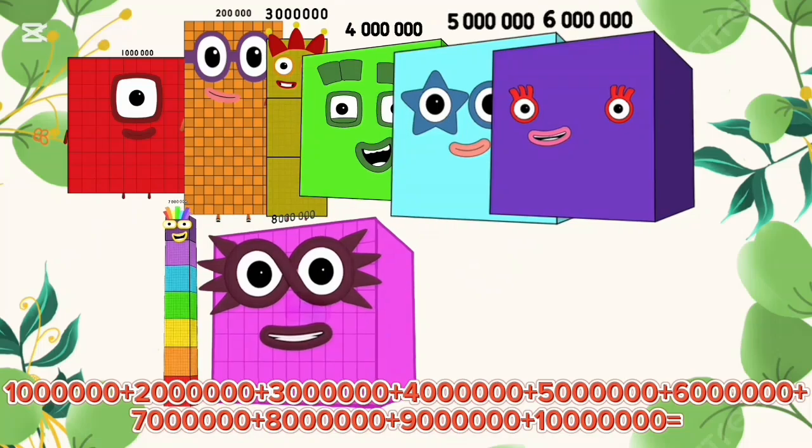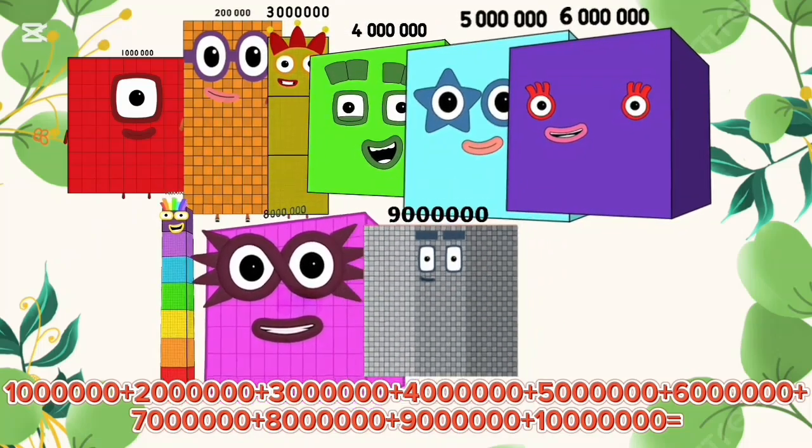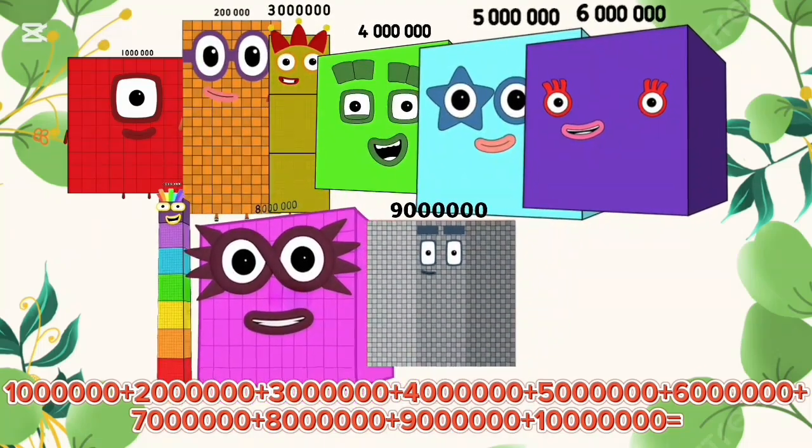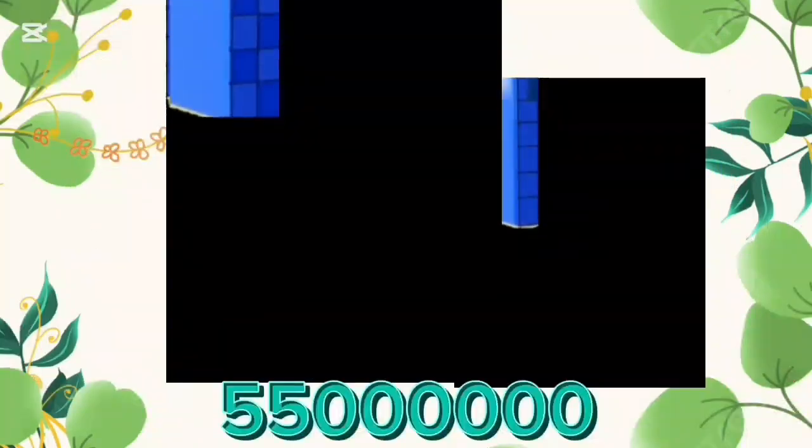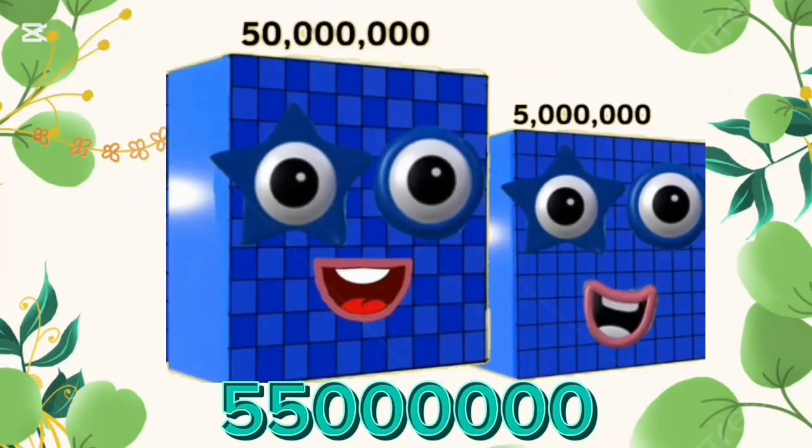8,000,000 plus 9,000,000 plus 10,000,000 is equal to 55,000,000.